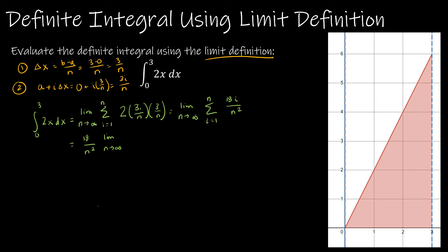What's left inside is just i, and we replace the summation with n times n plus 1 over 2. Bringing 18 over n squared back in, this becomes n squared plus n times 18 over n squared. Simplifying: 9 times n squared over n squared is 9, and 9 times n over n squared is 9 over n. Taking the limit gives us 9 plus 0, or 9.